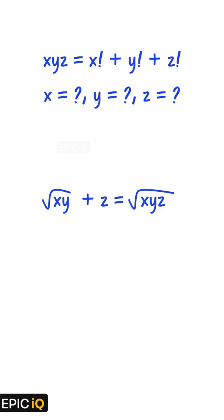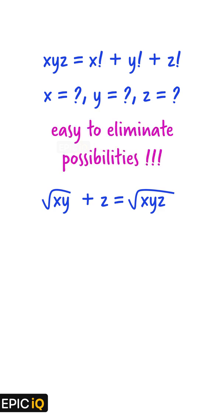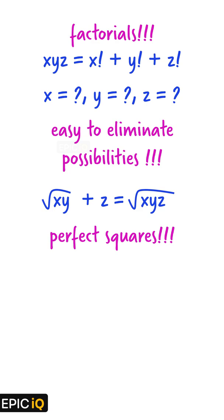Can you solve them? They are simpler than many other cryptarithmetic problems because you can eliminate a lot of possibilities right at the beginning. In the first problem, you can eliminate various possible values because of the factorials.